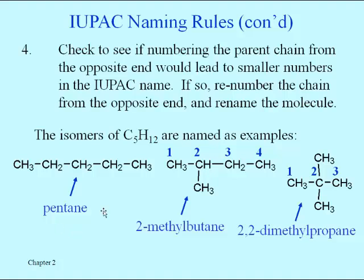The way these isomers of C5H12 are drawn, we're essentially numbering them from left to right. When all five carbons are in sequence there are no branches or substituents, and that one is regular pentane. The one in the middle doesn't have the word pentane in its name because only four of those five carbons are part of the parent chain, so it's named as a derivative of butane — it's butane with a methyl group hanging off the second carbon.